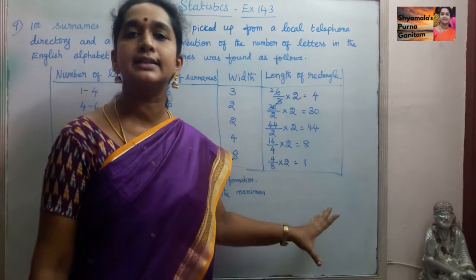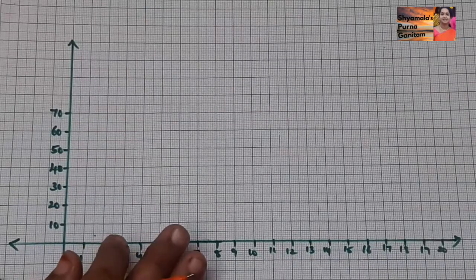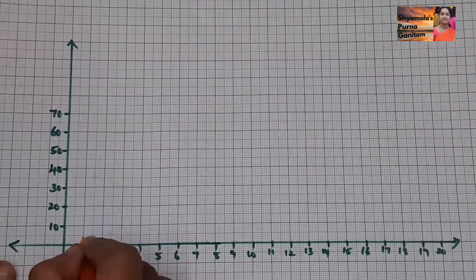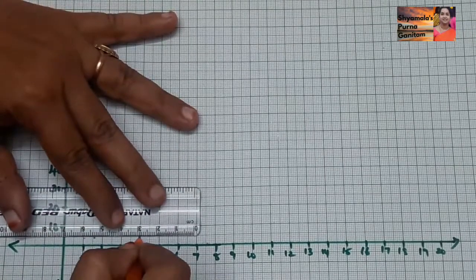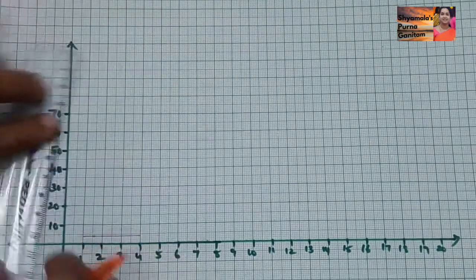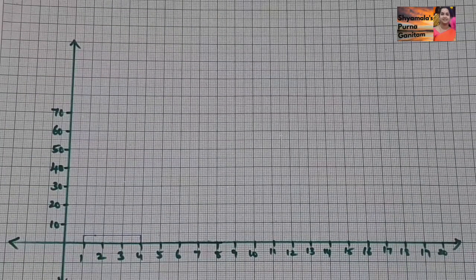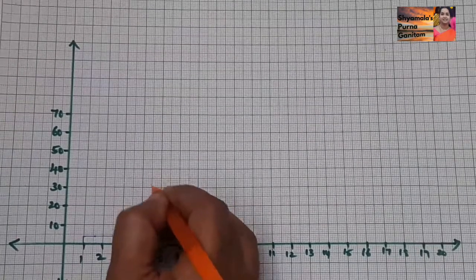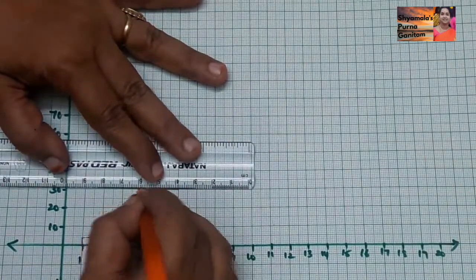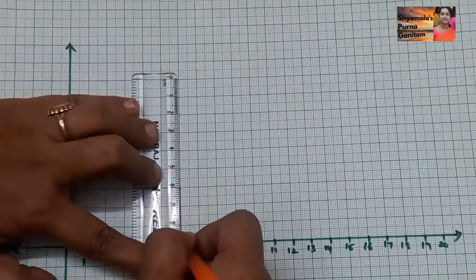Now we will draw all these in the graph and plot the histogram for the given distribution. For 1 to 4, the adjusted frequency is 4, so we plot it here. For 4 to 6, the adjusted frequency is 30, so from 4 to 6 we plot up to 30.